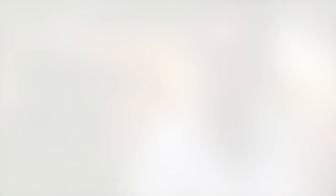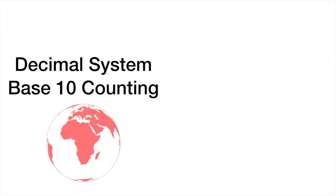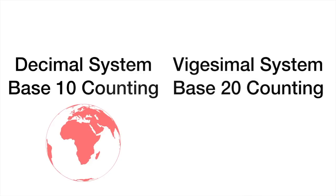Now let me try and explain this. In the context of the world's languages there are lots of different ways of counting. The most common in European languages are either based on counting which is the decimal system — deci meaning 10 — or base 20 counting, the vigesimal system, where vigesi means 20.